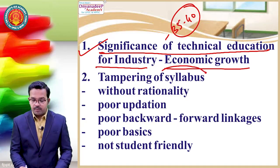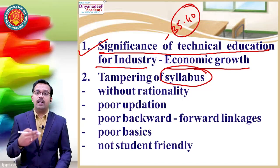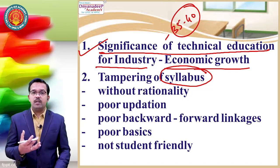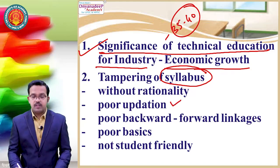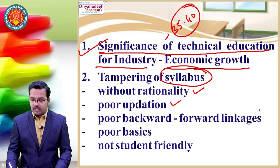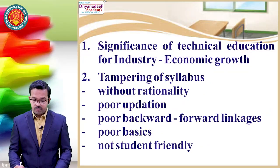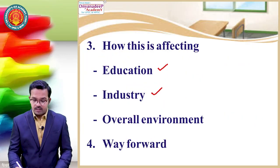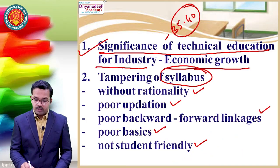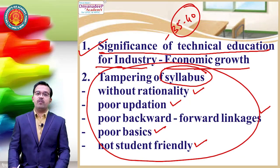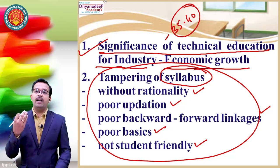Then, explain how we are tampering with the syllabus and how it is affecting the link between education and application. Why is the tampering happening? Poor updation of the syllabus, tampering done without any rationality or basis, poor backward-forward linkages, poor basics, lack of focus, and education that is not student-friendly. How it is affecting education, industry, and the overall world must be addressed. Finally, the way forward must be written in 30 to 35 words, with the main focus on tampering of the syllabus from the perspective of technical education, industry, and their link.